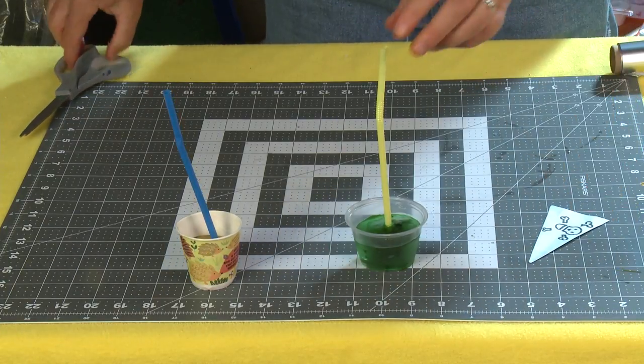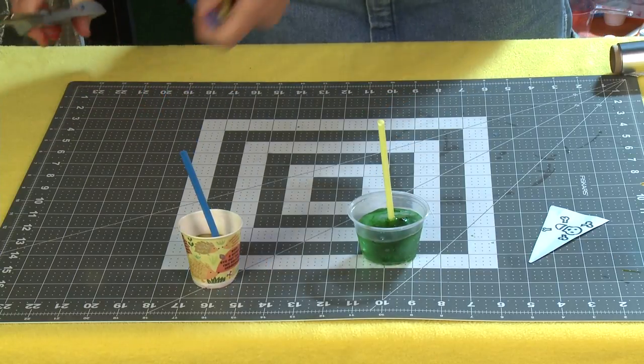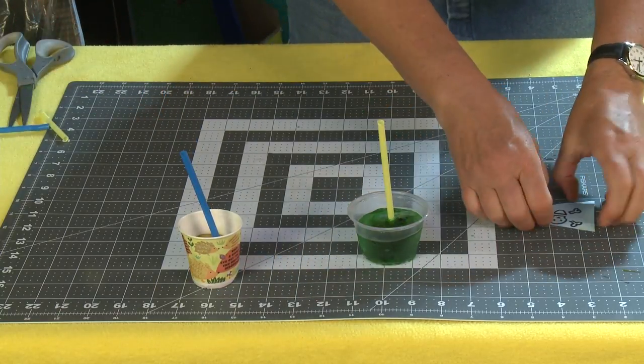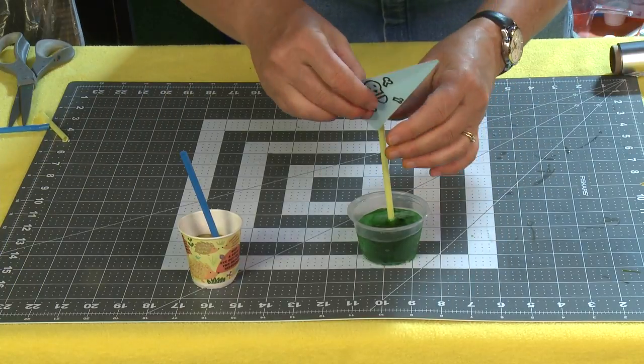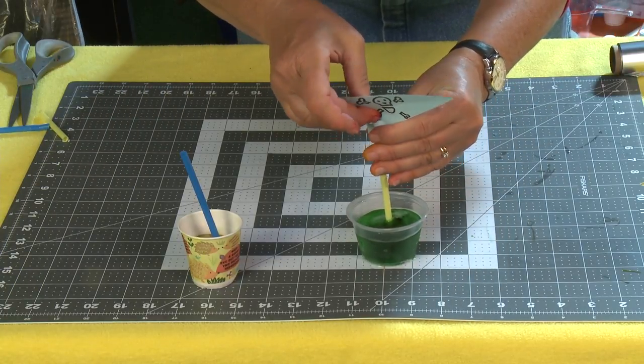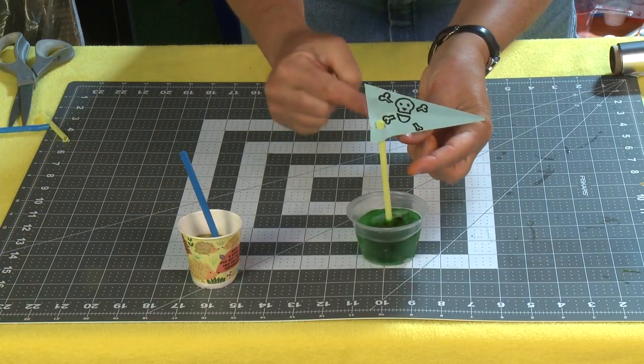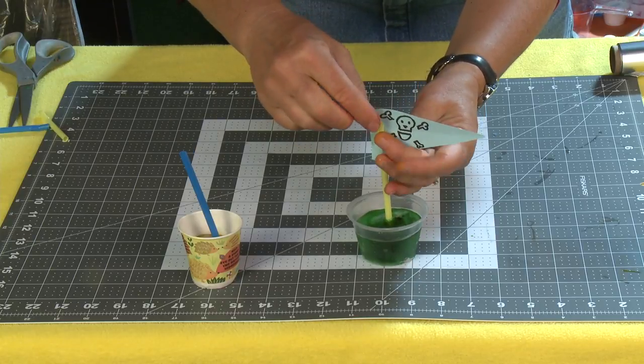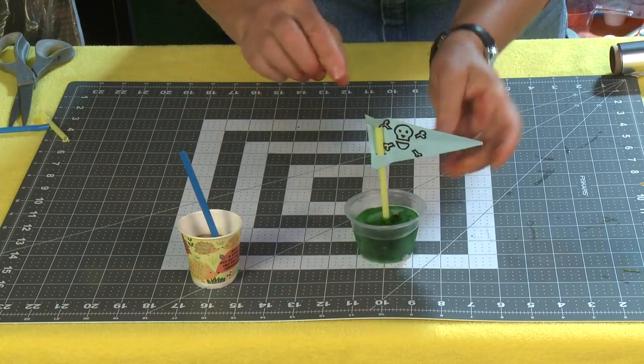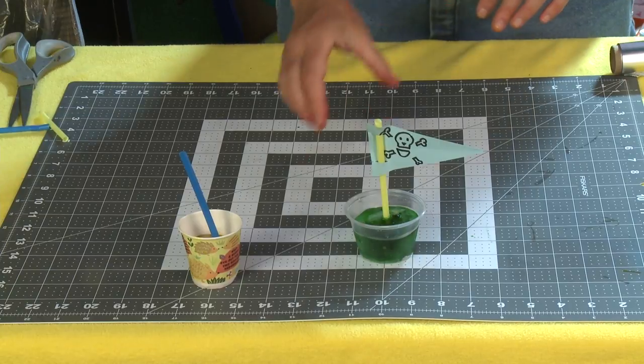Then all you're going to do is cut off this extra and slip your little flag over top. So you open it up and stick one part through and the other part through. So you just slide it right on over there.